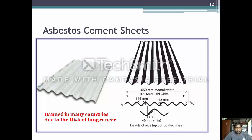Next is the asbestos cement sheet. These sheets are banned in many countries due to the risk of lung cancer. The overall width of the sheet is about 1050 mm and the effective width is 1010 mm. The thickness of the sheet is about 48 mm, and the side lap hook detail is about 40 mm minimum.